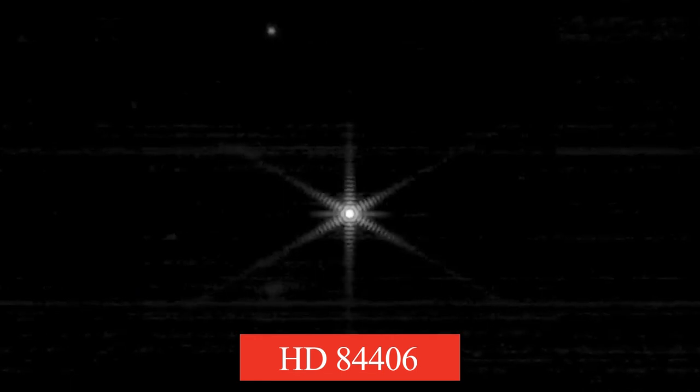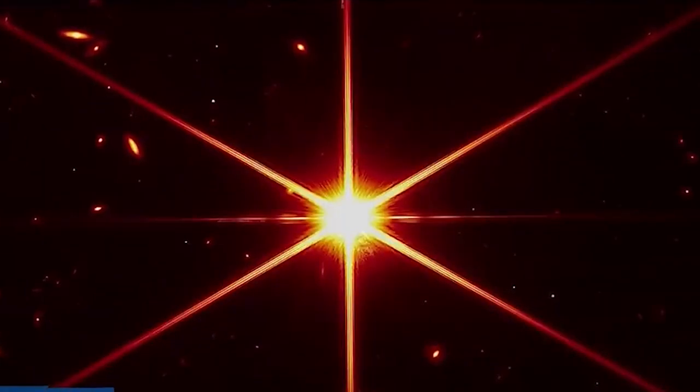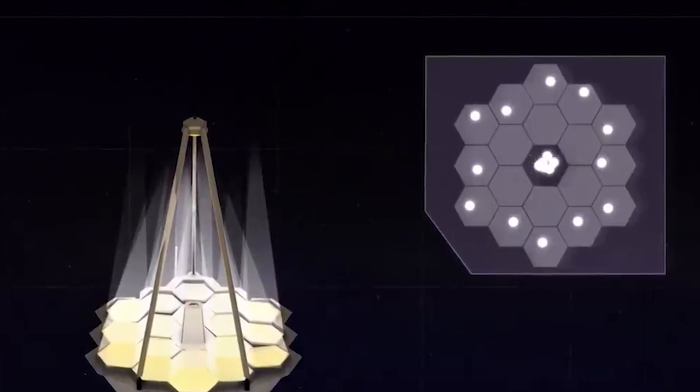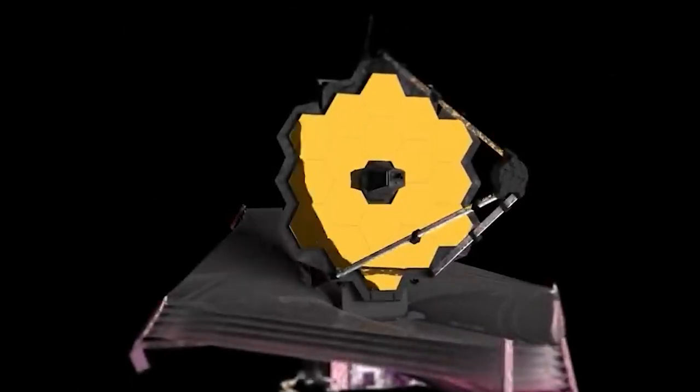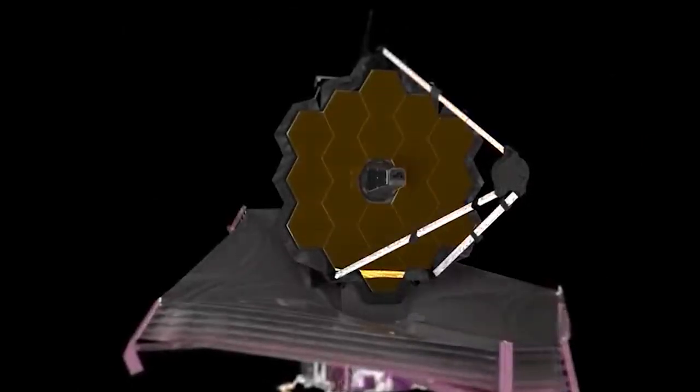The picture you're looking at is HD 84406, a single brilliant star in the Ursa Major constellation. Because mirror parts were still being aligned, the star appeared in 18 distinct positions. JWST's unaligned mirror segments reflected light into the telescope's detectors, resulting in the seemingly chaotic capture. It was an essential component of Webb's preparation for taking breathtaking photos of the universe.